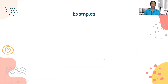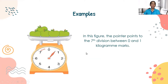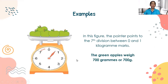I will give you some examples. Here you can see green apples. In this figure, the pointer points to the 7th division between the 0 and 1 kilogram marks. Therefore, we can say that the green apples weigh 700 grams.